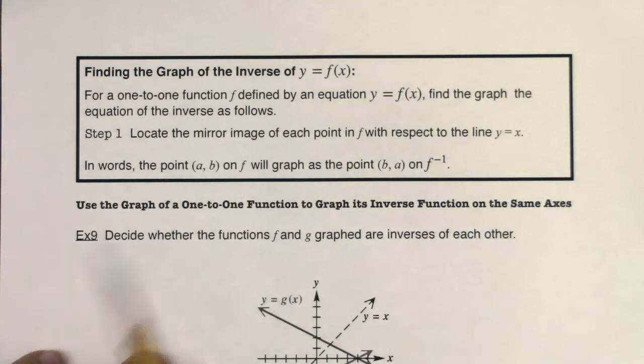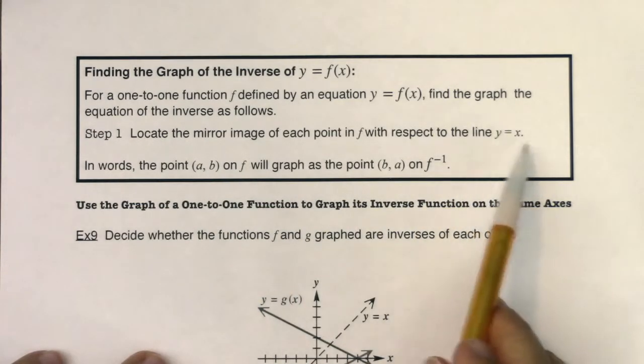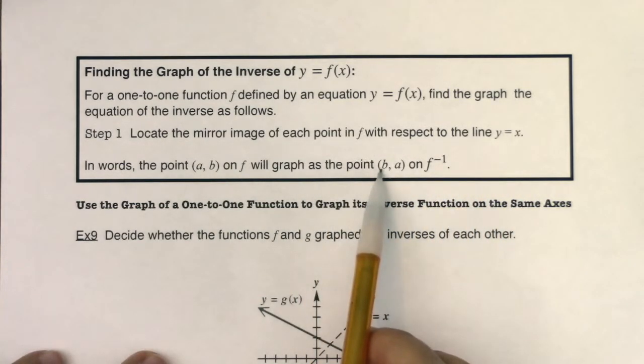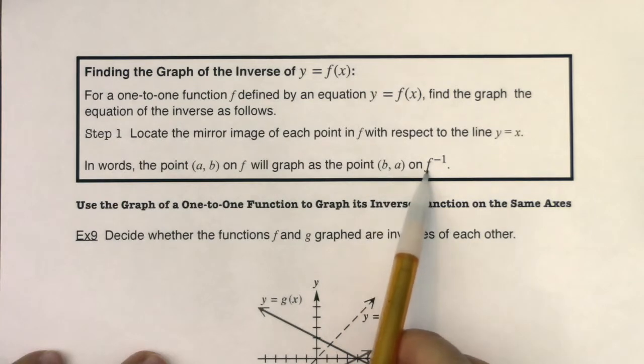And what that means is any point on your original graph that had coordinates a, b will be reflected over the y equals x line, and now we'll plot out as b, a on the inverse function.